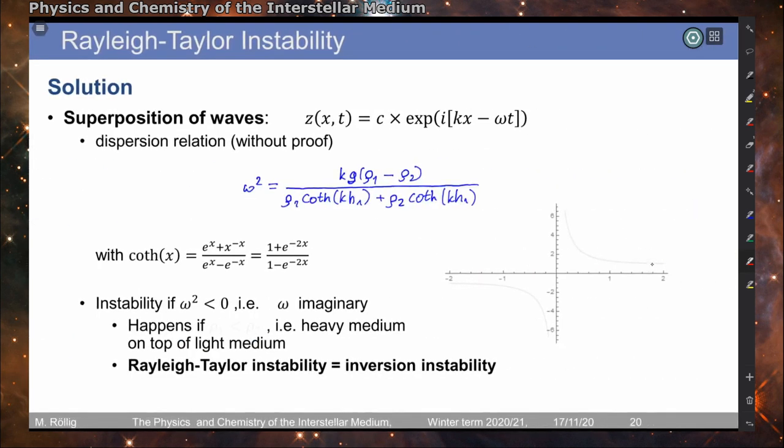The cotangent hyperbolic can also be written as a combination of exponentials: e to the x plus e to the minus x divided by the difference between the two. And this approaches the limit of one for large arguments. We only need to look at positive numbers because the argument will always be positive.